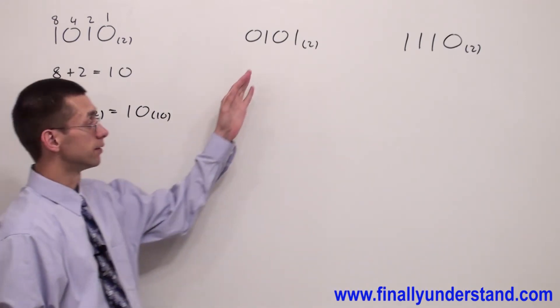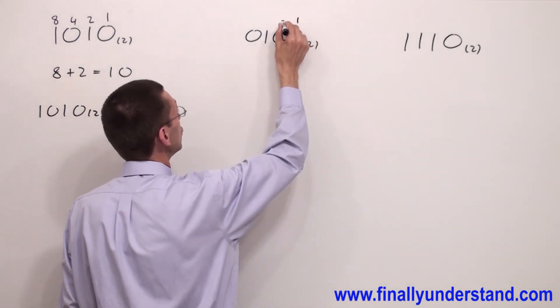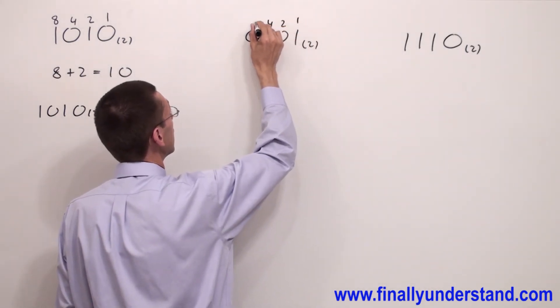Let's take a look at this example. Again, we're supposed to write the weights: one, two, four, and eight.